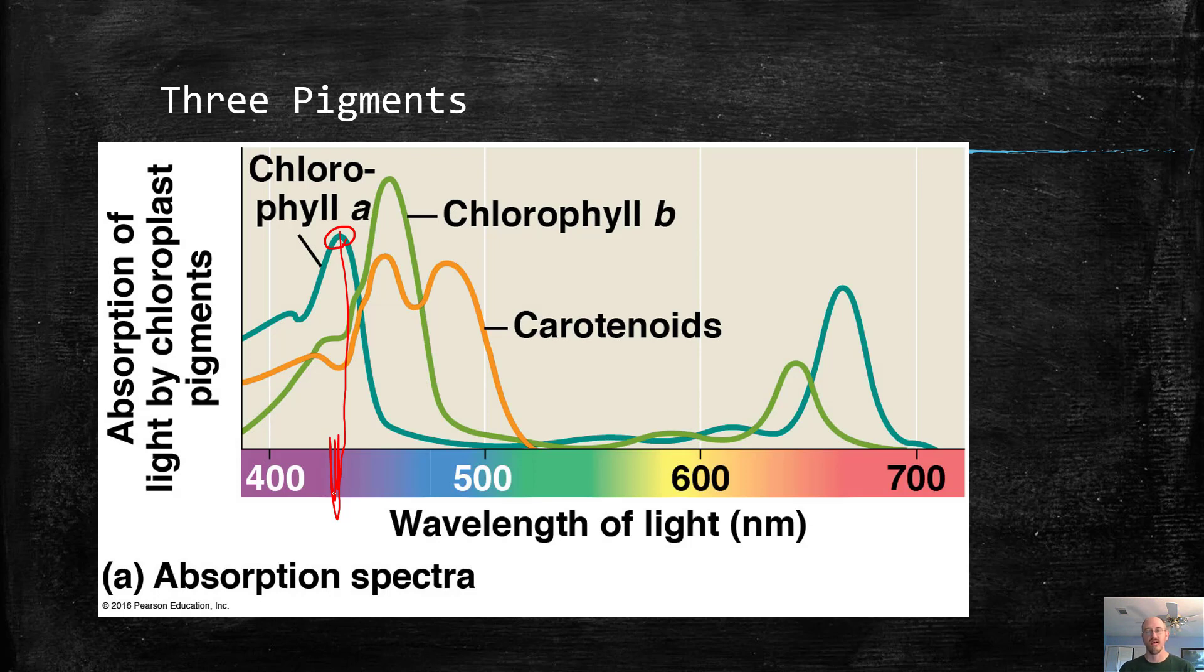If you put something in here that was white, nothing would be absorbed. Something that's black, all wavelengths would be absorbed. And in this case, they put chlorophyll A, chlorophyll B, and another kind of pigment found in leaves known as carotenoids in to see what colors were absorbed.